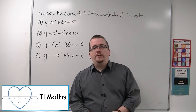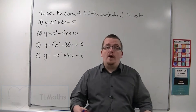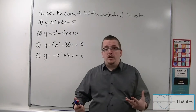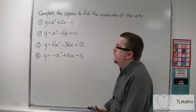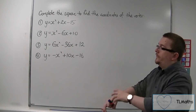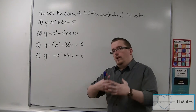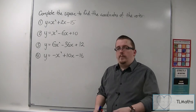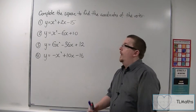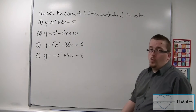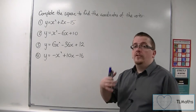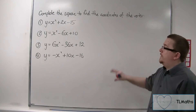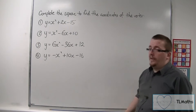In this section we're going to be looking at translations, one of the transformations that we have to consider in Core 1. In order to get to that stage, I'm going to do a brief recap in this video of how to complete the square on a parabola in order to find the coordinates of its vertex. I'm going to go through these four examples here.